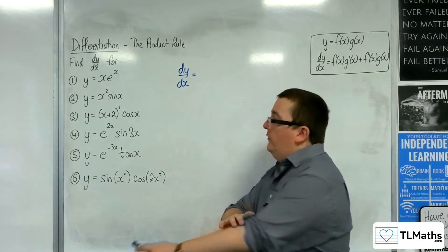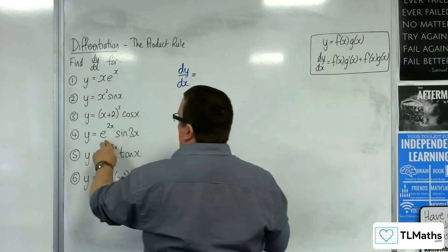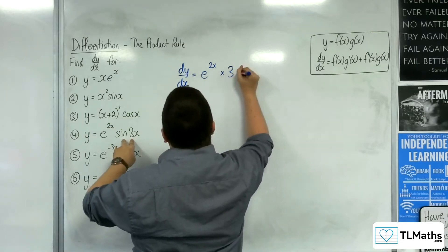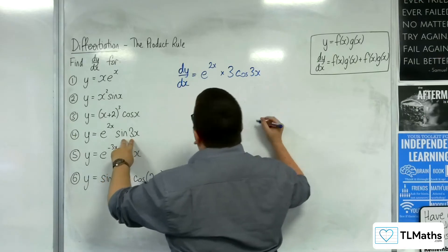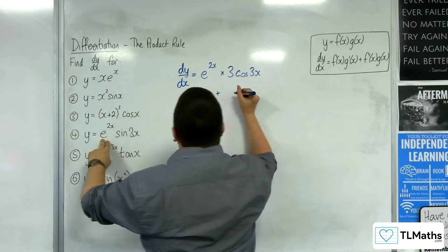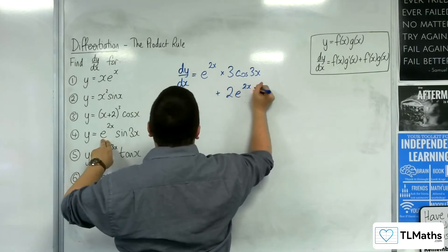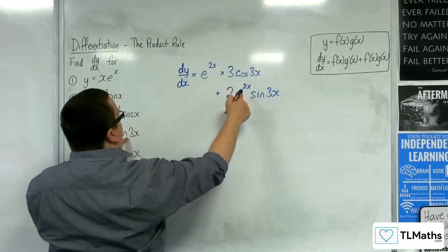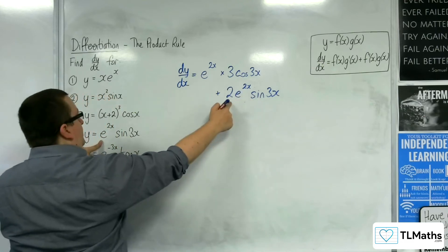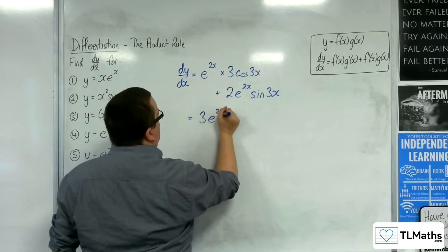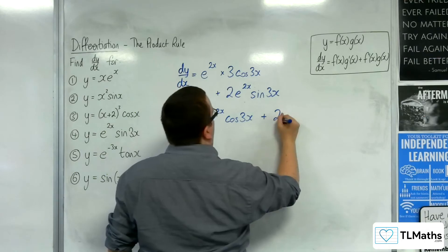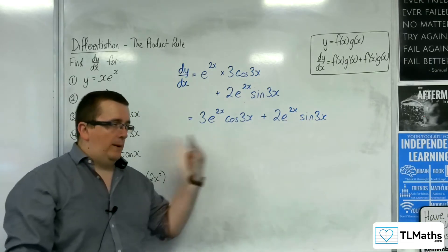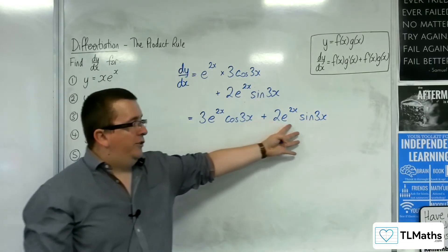Number four. We've got e to the 2x sine 3x. So, the first times the derivative of the second — sine 3x differentiates to 3 cosine 3x — plus the second times the derivative of the first, so 2e to the 2x times the sine 3x. Tidy that up: we've got 3e to the 2x cosine 3x plus 2e to the 2x sine 3x. And of course you could then factorise that, bring the e to the 2x out of a bracket, and have 3 cosine 3x plus 2 sine 3x inside the bracket.